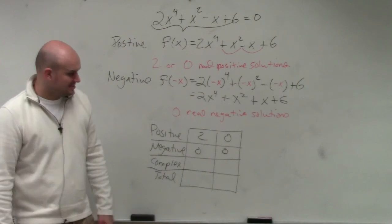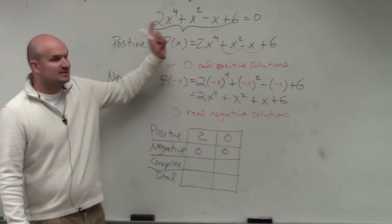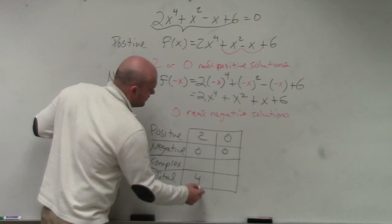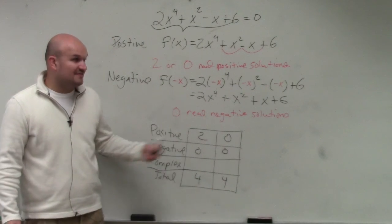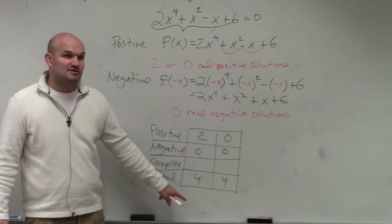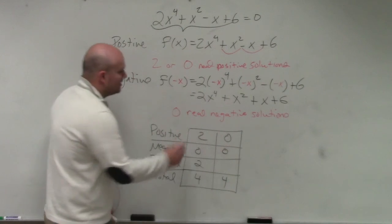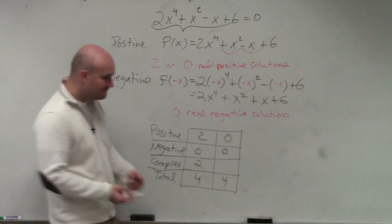So we have two or zero. How many negative do we have? Zero. Zero. And before we get to complex, how many total is there? What's the degree? Four, right? So therefore we have four and four. So now, ladies and gentlemen, if I have two positive, zero negative, how many complex do I need so I have four solutions? Two. And if I have zero positive, zero negative, how many complex do I need? Four.